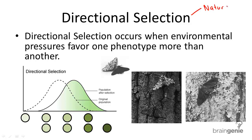One type of natural selection that came to be discovered far after Darwin's time is the theory of directional selection. This concept, along with stabilizing selection and disruptive selection, explains one pathway for organisms in terms of natural selection.